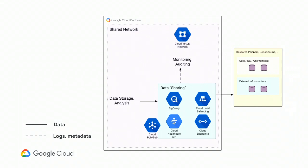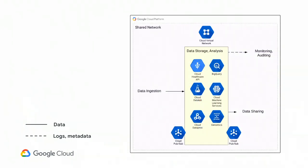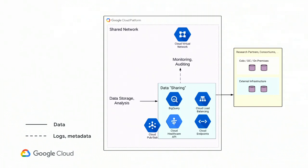There does come a time when you do want to provide services externally, and in some cases this can be done in a different project with its own network. This project can connect through service accounts to the data aggregation layer and also connect to external services. For example, if you want to serve an ML model publicly, this service would expose a public endpoint. Somebody makes an API request, it sends a service account request back to the underlying project, grabs something from the data set, brings it back, aggregates it, and shares it publicly.